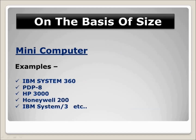The third type is the minicomputer, which is a mini version of the mainframe computer. Minicomputers are smaller and cheaper — less expensive than both mainframe computers and supercomputers. Their speed is slower when compared to supercomputers and mainframe computers.